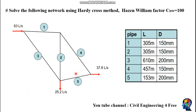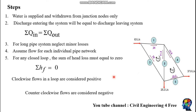Hello guys, welcome back to this channel. On today's video we'll see how to determine the discharge in a pipe network. We'll use the Hardy Cross method. The problem given is: we have a pipe network that has five pipes; flow is introduced at one node and water is withdrawn at two other nodes. We are given the length and diameter of each pipe.